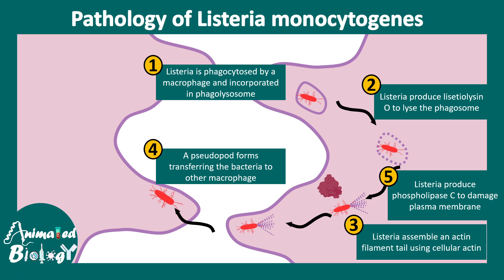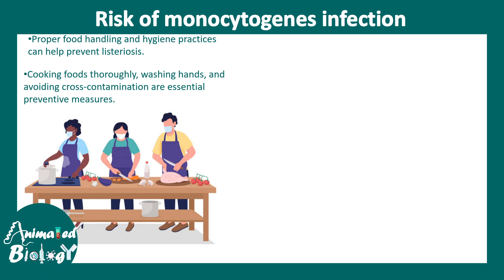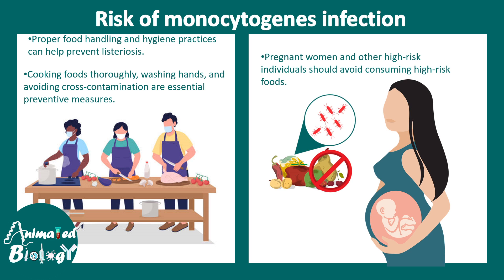The risk of Listeria monocytogenes involves improper handling of food and poor hygiene practices. The best preventive measures include cooking food thoroughly, washing hands, and avoiding cross-contamination. Pregnant women and other immunocompromised individuals should carefully monitor what they consume and avoid any kind of contaminated food.